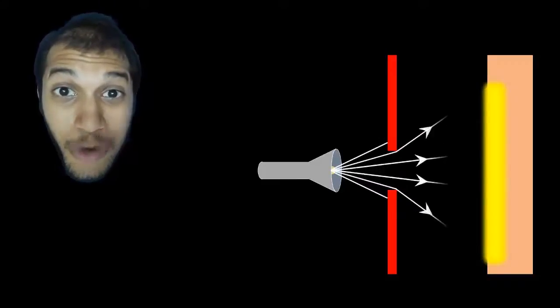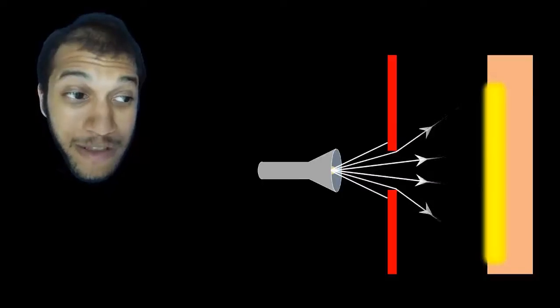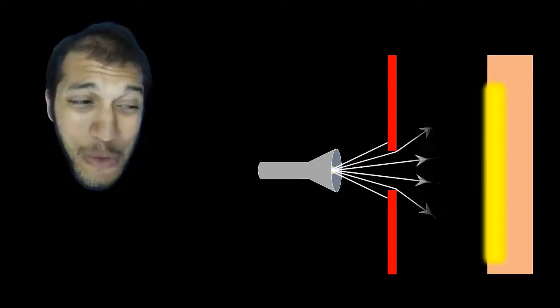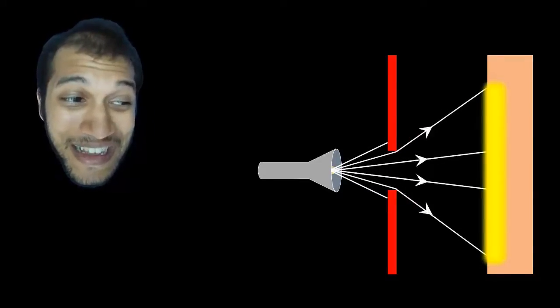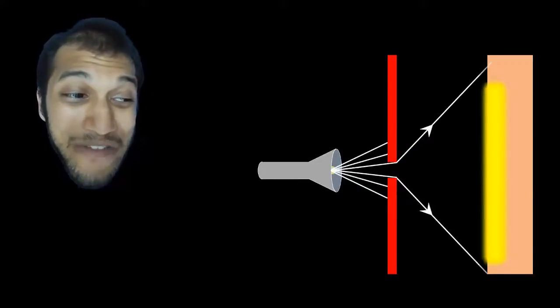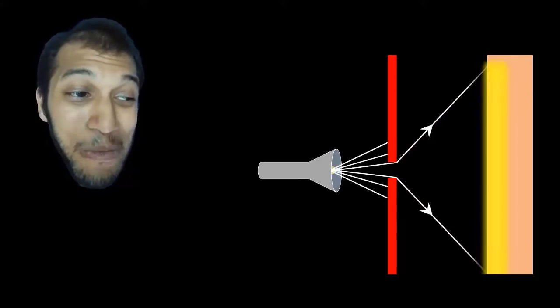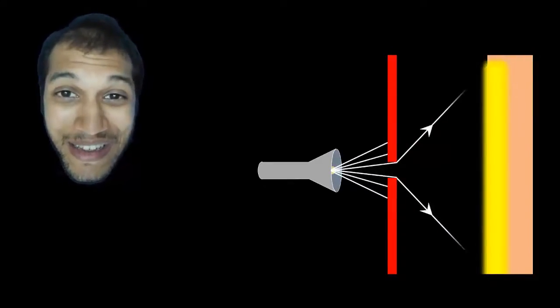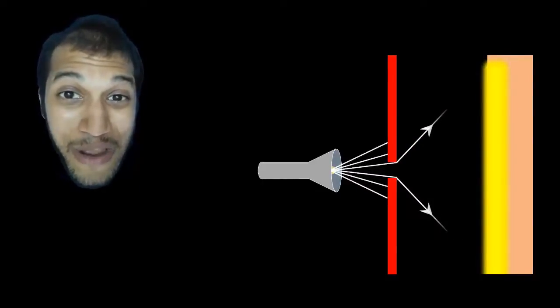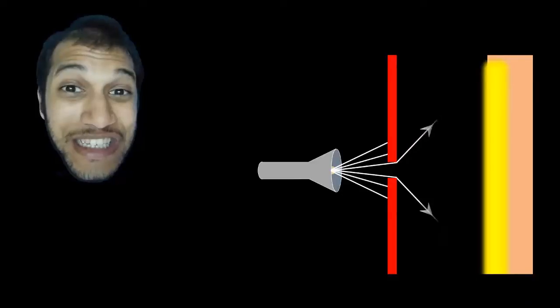And that's not it. Now comes something even more crazy. Suppose I make the slits narrower. What do you think is going to happen? Well, if I make the slits narrower, the waves are going to bend even more, and even more region of the screen is going to get illuminated now. That is an awesome property of waves. And this property of waves is what we call as diffraction.